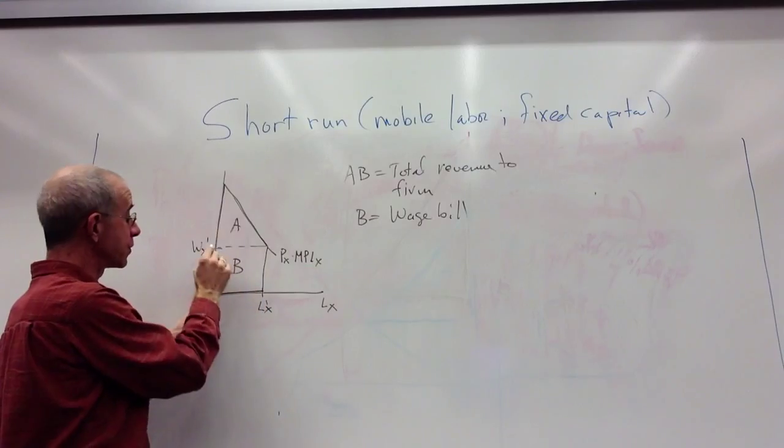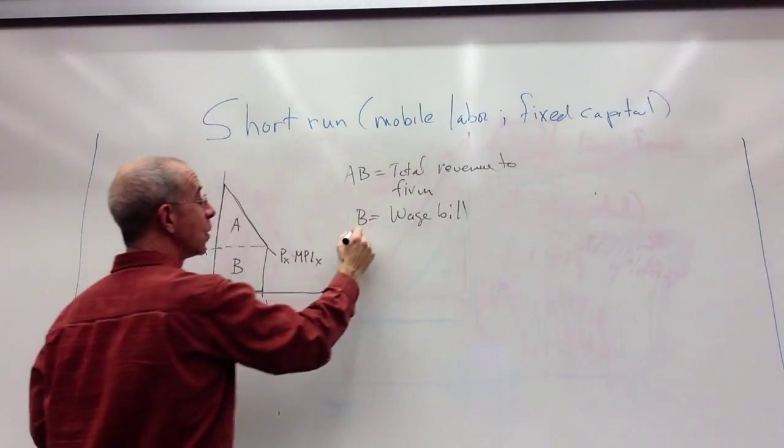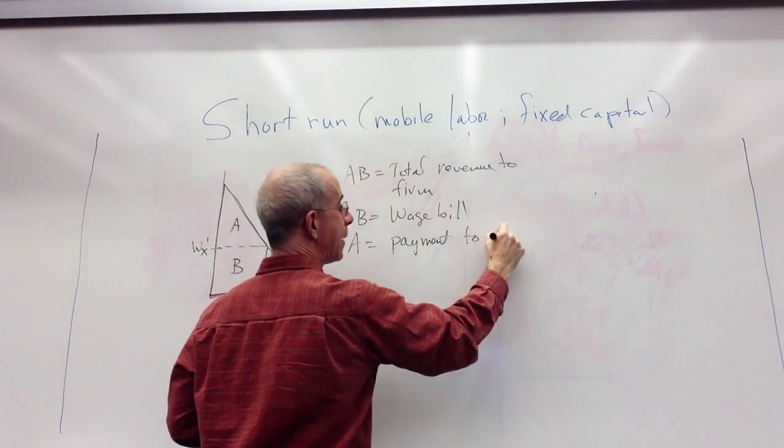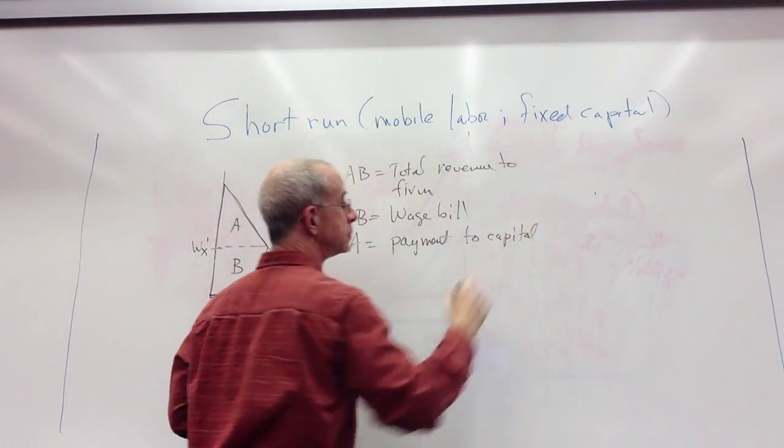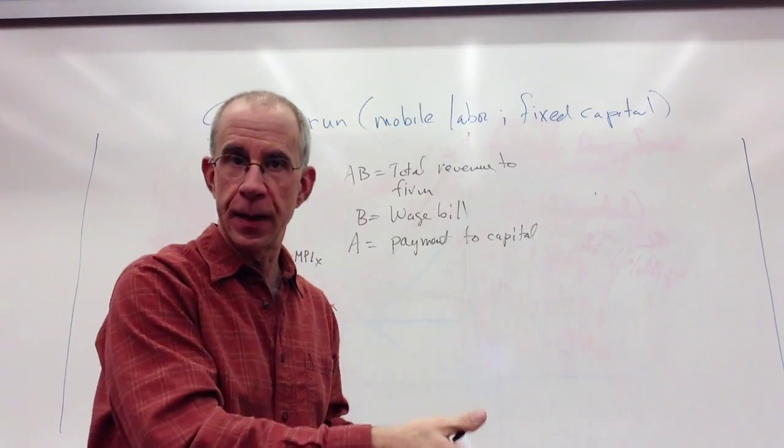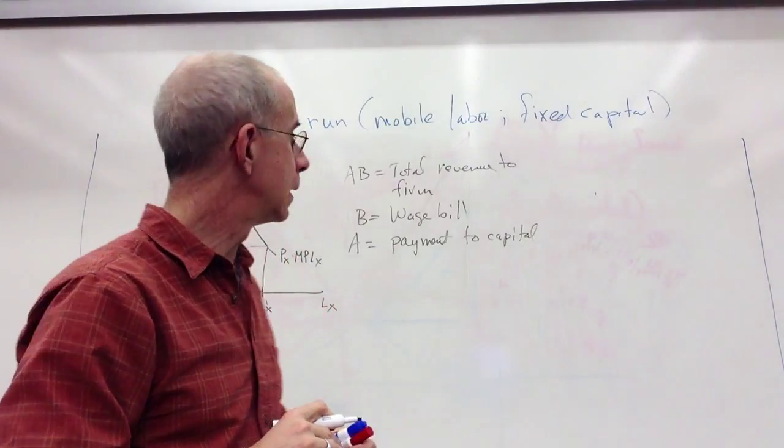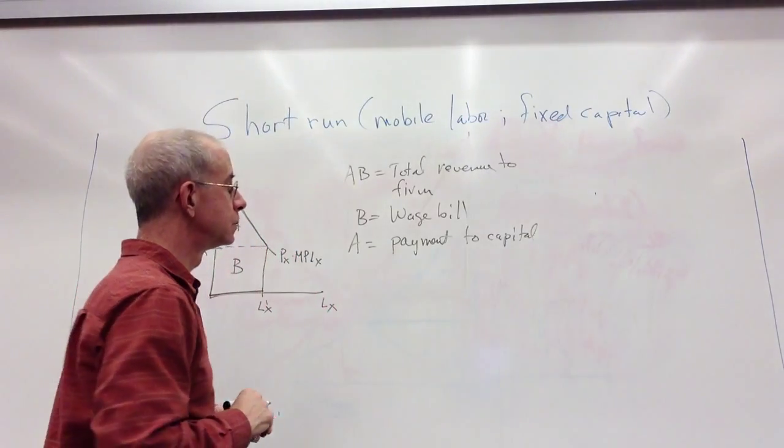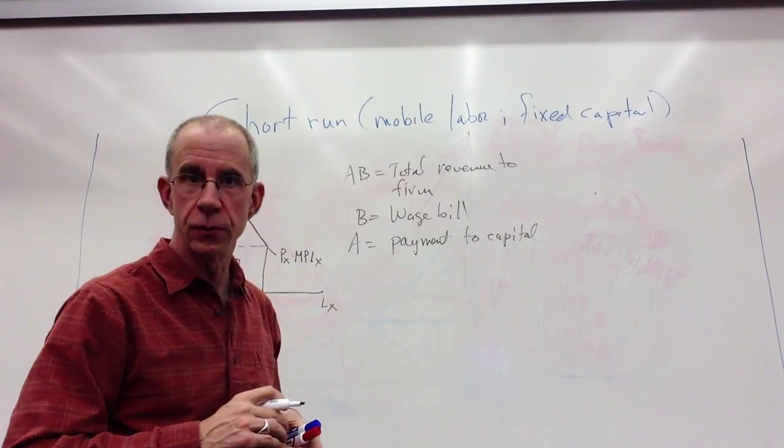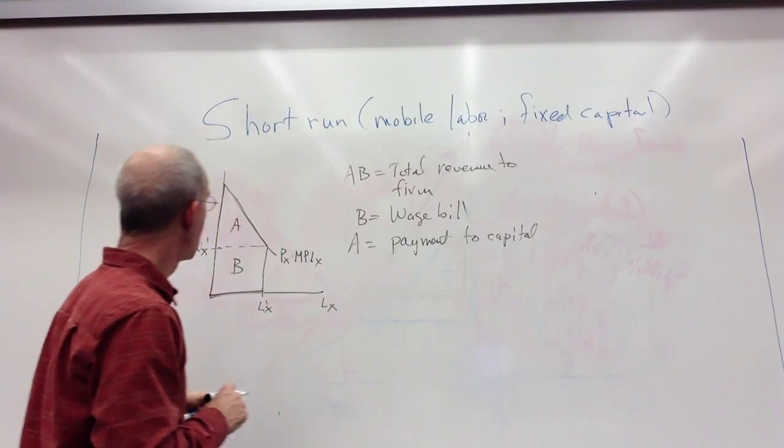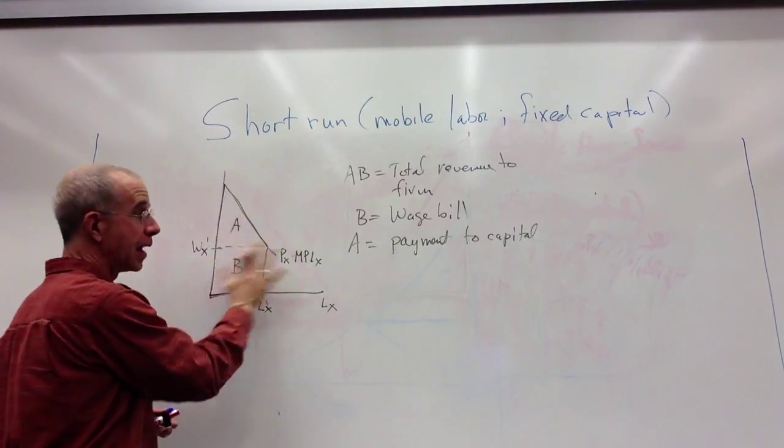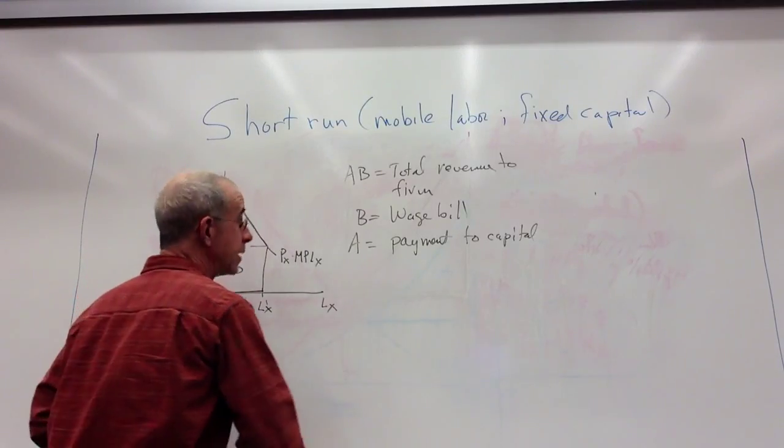So A is the payment to capital. If we assume we've got perfect competition and the capital earns everything that they don't pay to workers, this is going to be the market return to capital. This is an important thing to keep in mind.